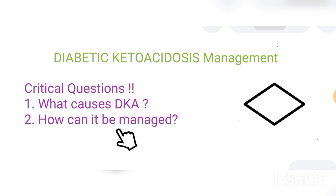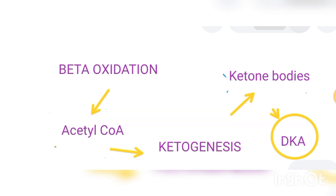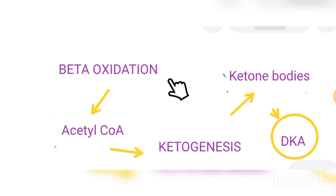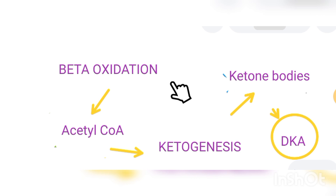So today I want us to focus mainly on the management of diabetic ketoacidosis. Before we look at management, just a bit of a recap of how we got here. Someone has DKA — how exactly did we get there? This is where we use the principles of biochemistry, outlining metabolic pathways that could actually lead to diabetic ketoacidosis.